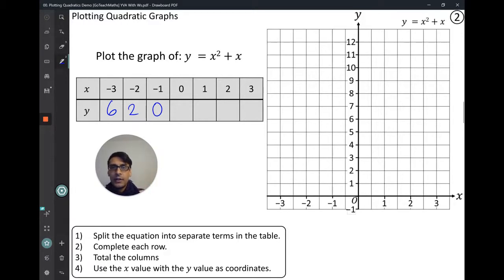0 squared is 0, 0 plus 0 is just 0. That tells us that the minimum point is somewhere in between those two points. And you'll see that when I plot this. 1 squared is 1, 1 plus 1 is 2. Now we can see it's going to be symmetrical. So I'm expecting a 6. So 2 squared is 4, 4 plus 2 is 6. That's correct. And then 3 squared is 9, 9 plus 3 is 12.